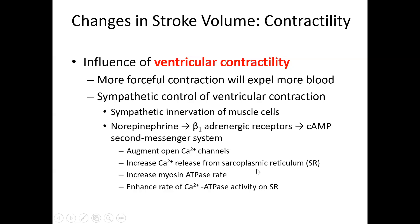We also increase the amount of calcium released from the sarcoplasmic reticulum, increase the myosin ATPase rate — that's the activity of the myosin heads in cardiac muscle — and increase the calcium ATPase pump on the sarcoplasmic reticulum. The calcium ATPase activity clears calcium from the cytosol to cease muscle contraction. So we not only pump calcium into the cytoplasm for faster contractions, but also pump it back into the SR at a faster rate so the muscle can relax quickly between contractions.